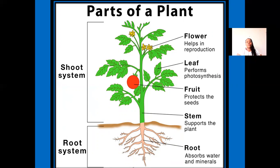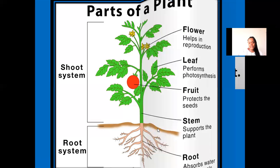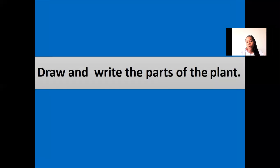Okay, chicos, como pueden notar, las partes de las plantas se dividen en flores que se encargan de ayudar a la reproducción, las hojas que se encargan de la fotosíntesis de las plantas, la fruta protege la semilla, el tallo es el que da el soporte a la planta, y también tenemos las raíces que absorben el agua y los minerales. Todo este sistema de raíces se le llama root system, o el sistema de raíces. Okay, guys, and now you are going to draw and write the parts of the plants.